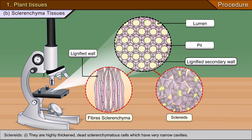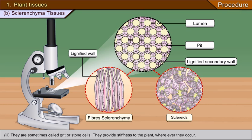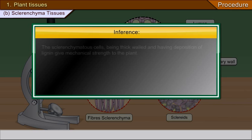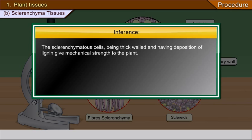Sclerides are highly thickened, dead sclerenchyma cells which have very narrow cavities. They may occur singly or in groups and are isodiametric in nature. They are sometimes called grit or stone cells. They provide stiffness to the plant wherever they occur. Inference: The sclerenchyma cells, being thick-walled and having deposition of lignin, give mechanical strength to the plant.